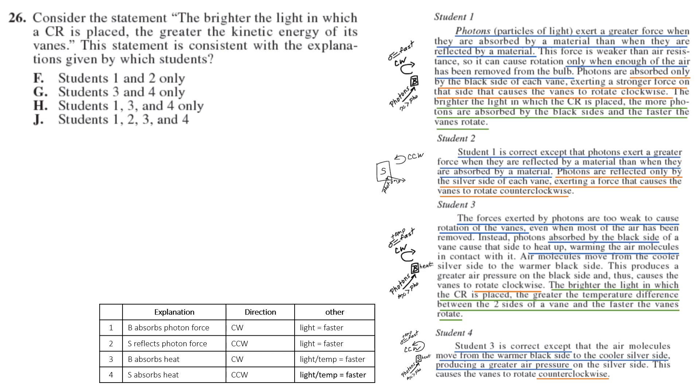26. Consider the statement: the brighter the light in which the CR is placed, the greater the kinetic energy of its veins. This statement is consistent with which students. We know that more light equals faster rotation in all of them. So faster is more kinetic energy. So J, all four students.